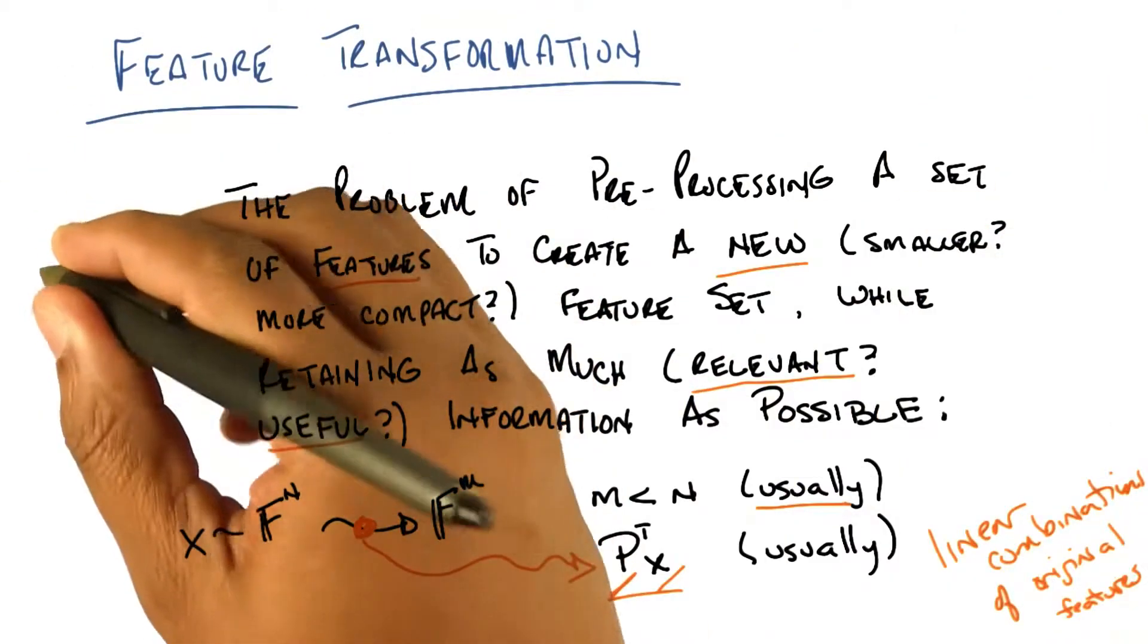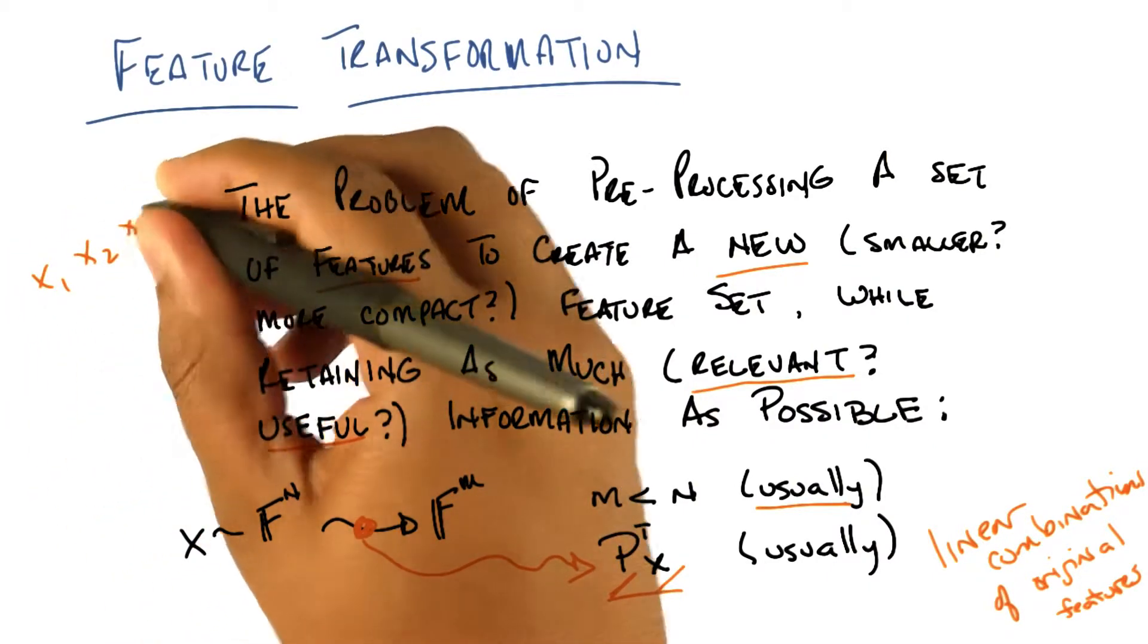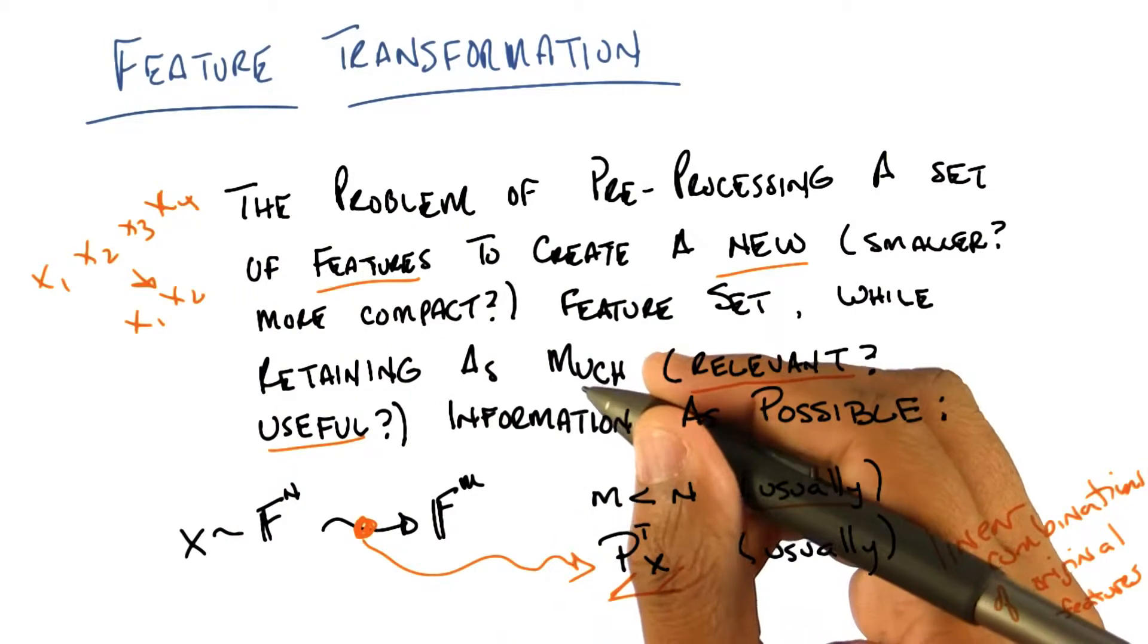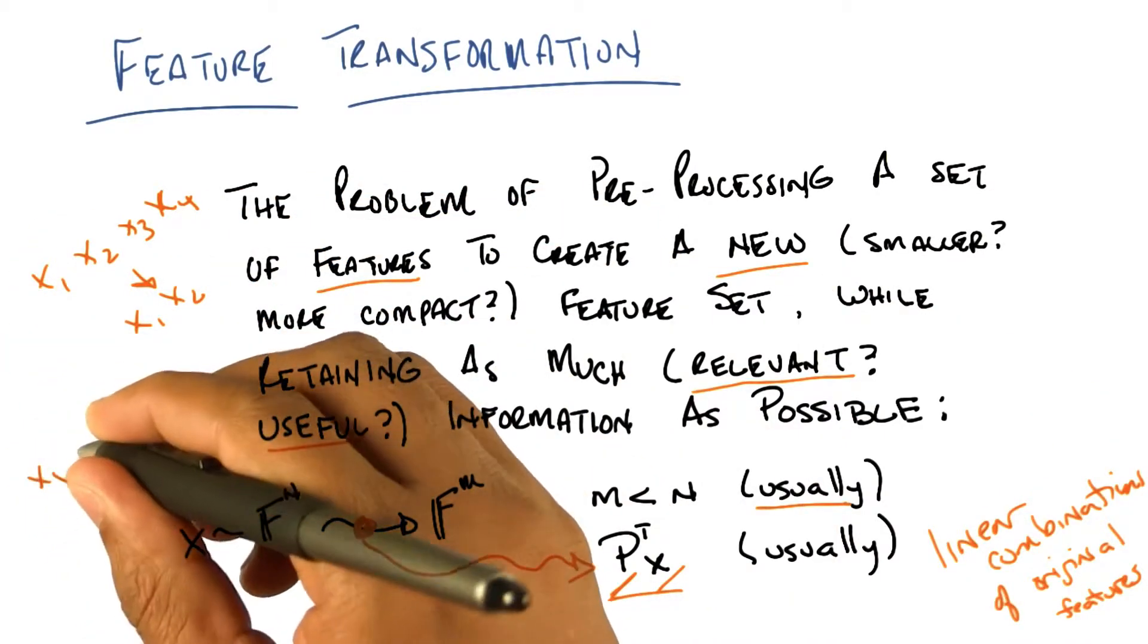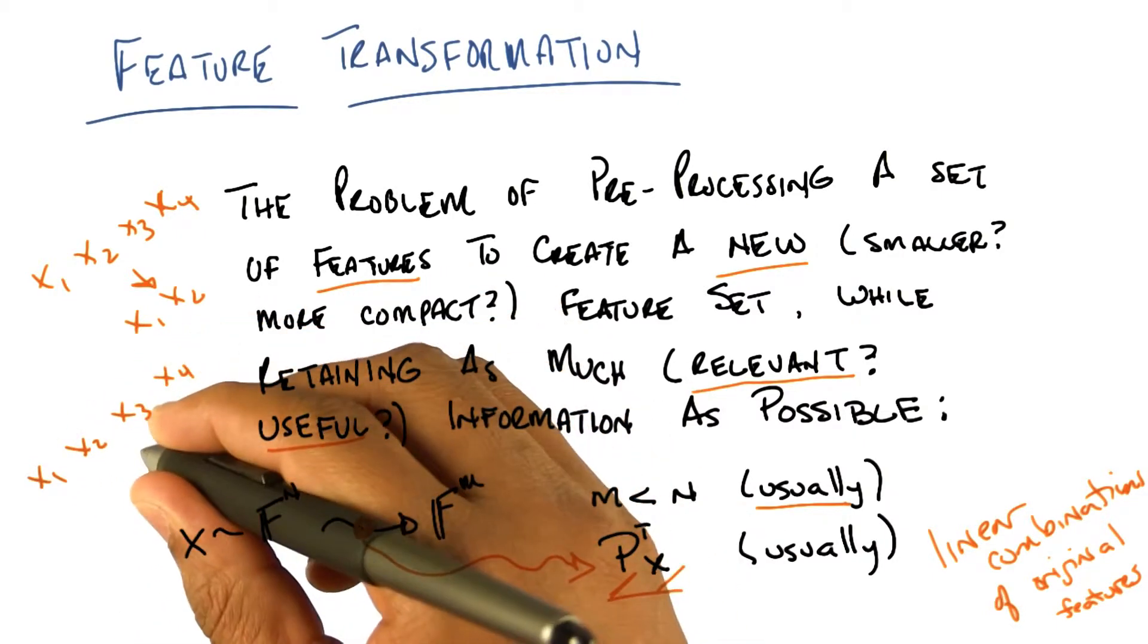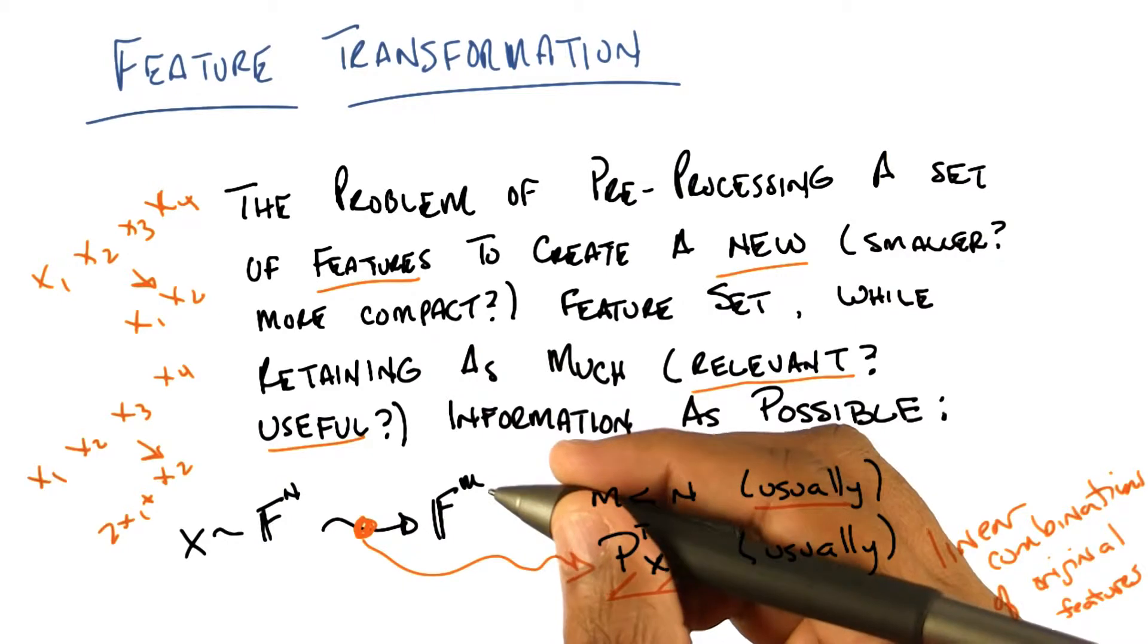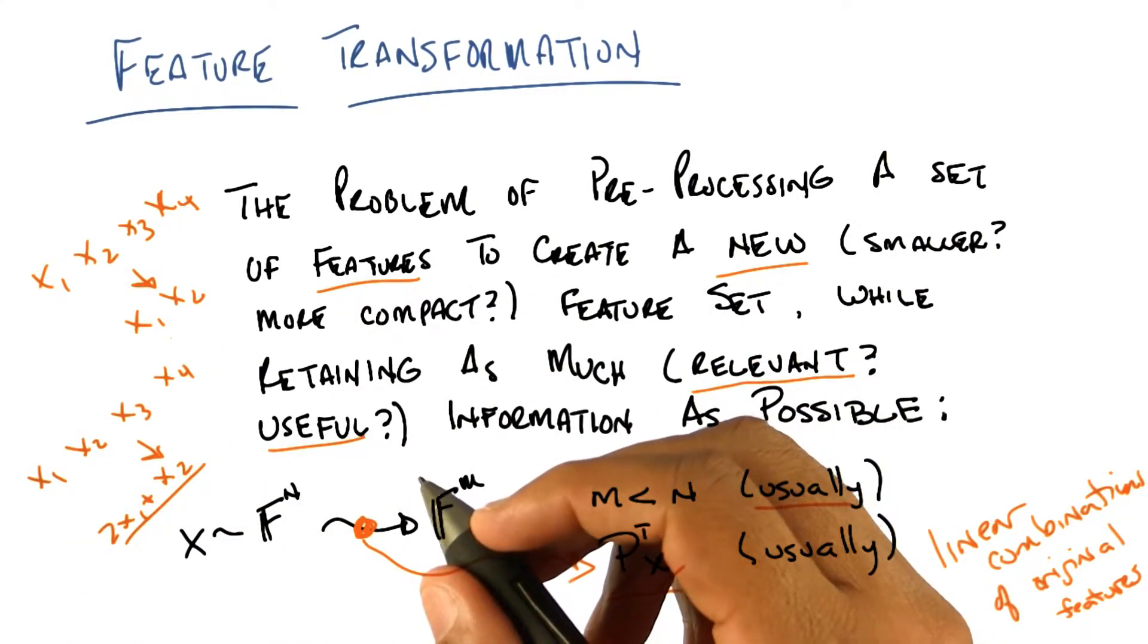So if we wanted to write that out, we could say that feature selection was about taking features like x1, x2, x3, and x4, and finding a subset like x1 and x2. And that would be feature selection. But feature transformation would be taking something like x1, x2, x3, and x4, and translating into something like 2x1 plus x2, which creates a single new feature. Which is a linear combination of a subset of them. Does that make sense?